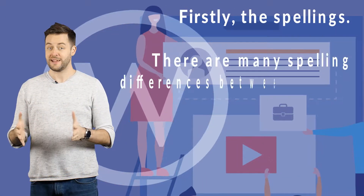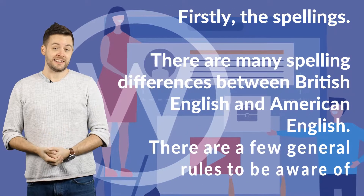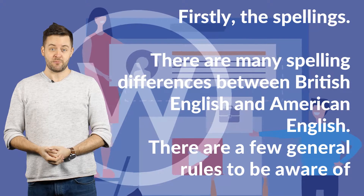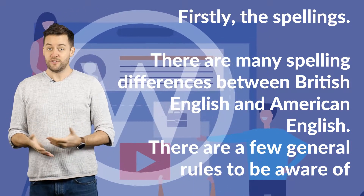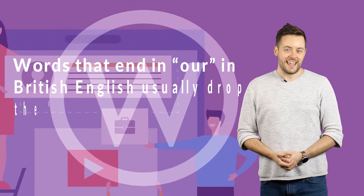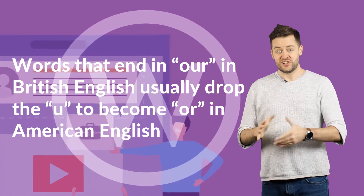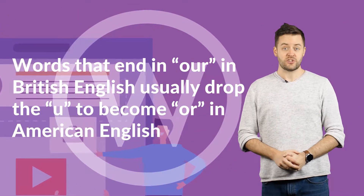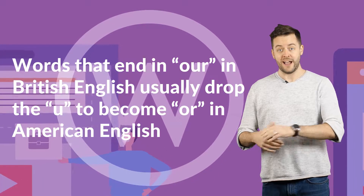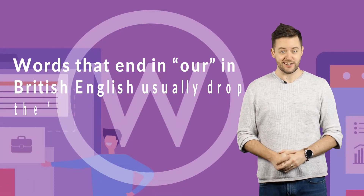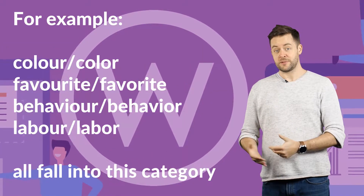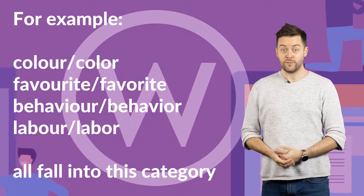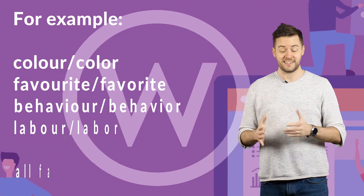Firstly, the spellings. There are many spelling differences between British English and American English. There are a few general rules to be aware of. Words that end in O-U-R in British English usually drop the U to become OR in American English. For example, colour, favourite, behaviour and labour all fall into this category.